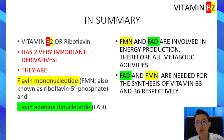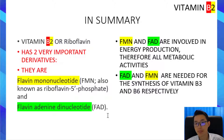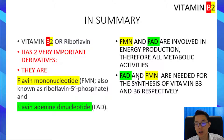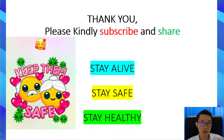In summary, vitamin B2 or riboflavin has two important coenzyme derivatives: flavin mononucleotide (FMN) and flavin adenine dinucleotide (FAD). FMN and FAD are involved in energy production and are therefore essential for all metabolic processes. FAD and FMN are needed for the synthesis of vitamin B3 and B6 respectively. Thank you very much for watching. If you like my presentation, please kindly subscribe and share. Stay alive, stay safe, and stay healthy.